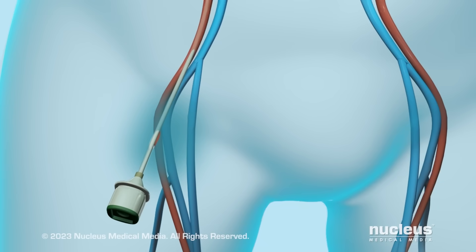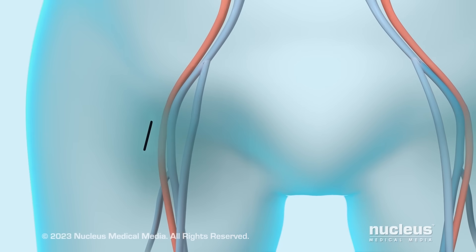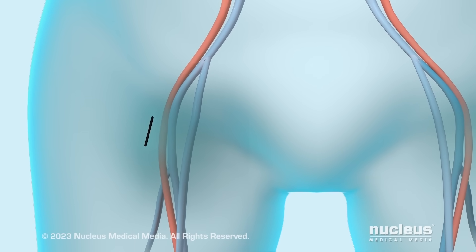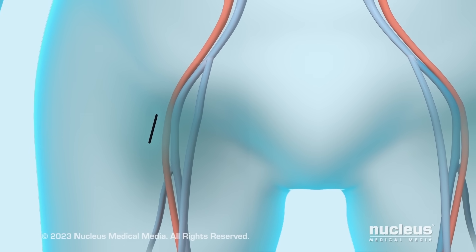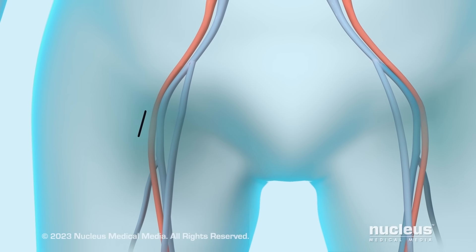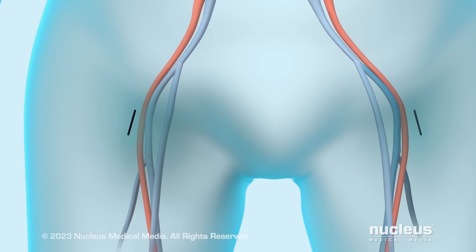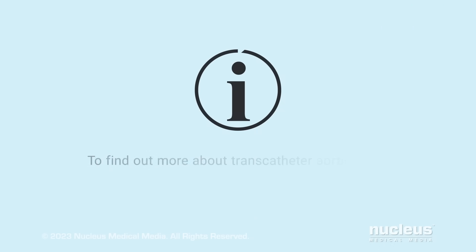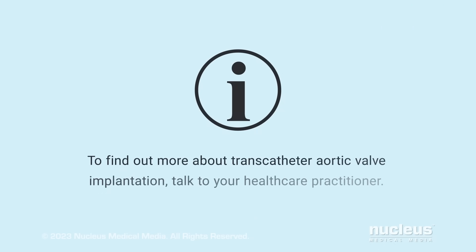At the end of the procedure, the introducer sheath in your groin will be removed and your skin incision will be closed. You will have another incision on the other side of your groin through which instruments were inserted to monitor your heart during the procedure. This skin incision will also be closed. To find out more about transcatheter aortic valve implantation, talk to your healthcare practitioner.